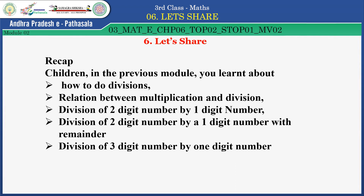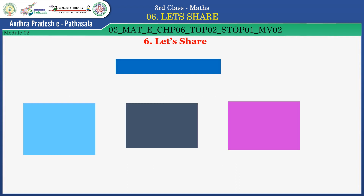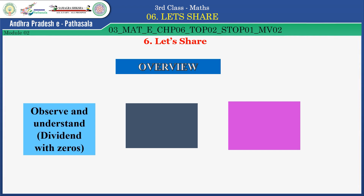Now, before entering the lesson, let's have a glance at the overview of the chapter. This chapter is basically divided into three parts. The first one is: Observe and understand dividend with zeros. The second one is: Even numbers and odd numbers. And the third one is: Try these. Now, first look at 'Observe and understand dividend with zeros.'